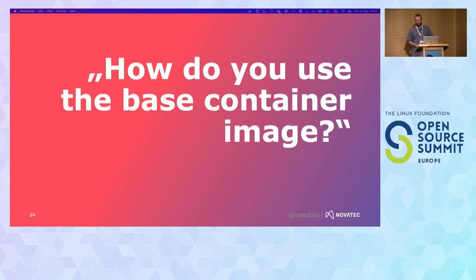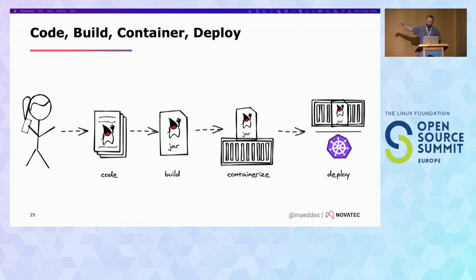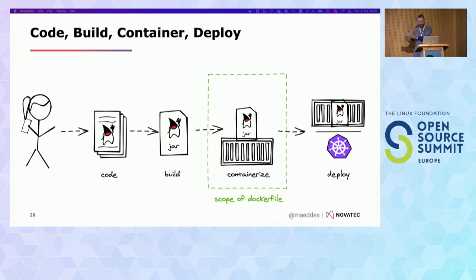Looking at this from a different angle: how do you actually use your base container image, and where is it embedded in your software development chain? Nowadays, with many applications running on Kubernetes, a typical workflow looks like: code, potentially test, build, put it into a container, and run it somewhere. The scope of the Dockerfile is normally the containerization step, and the idea of a pipeline is to make things repeatable and to gain confidence in the process.